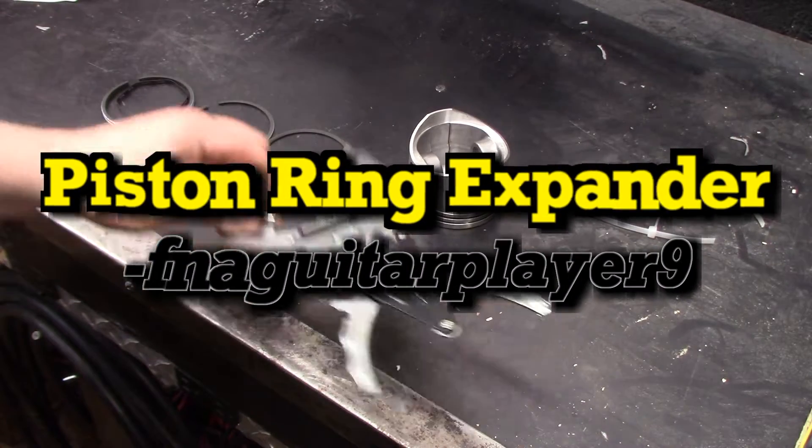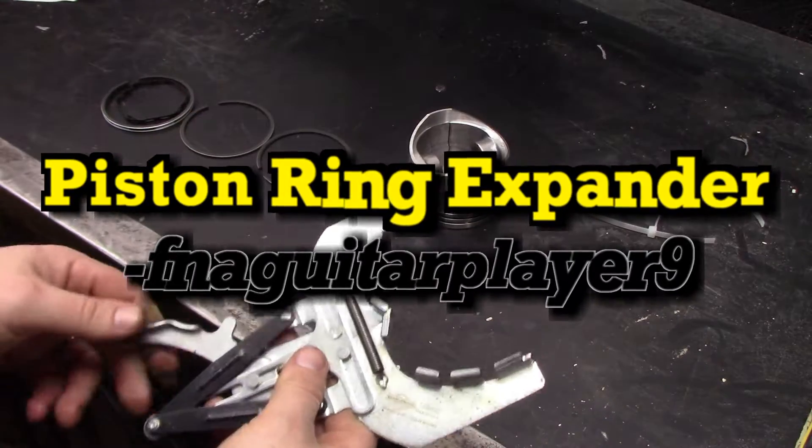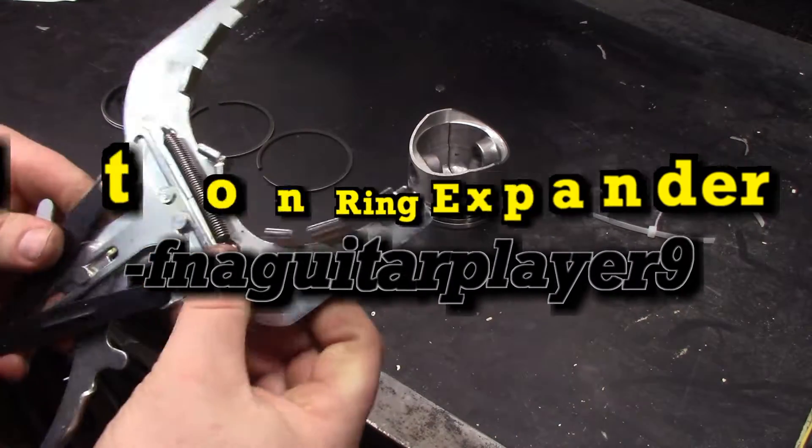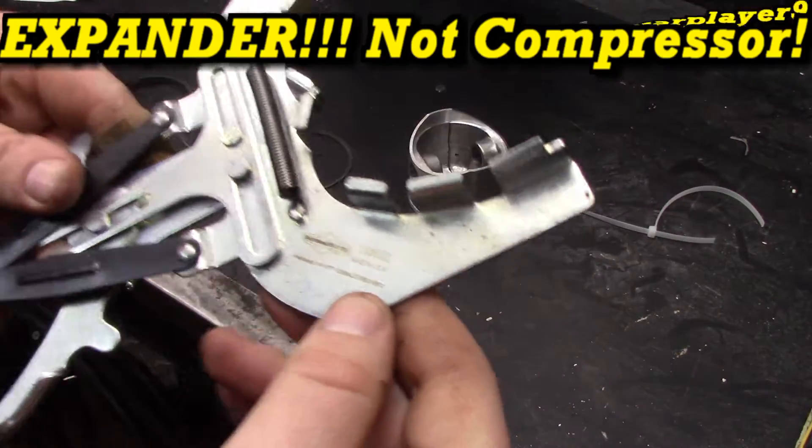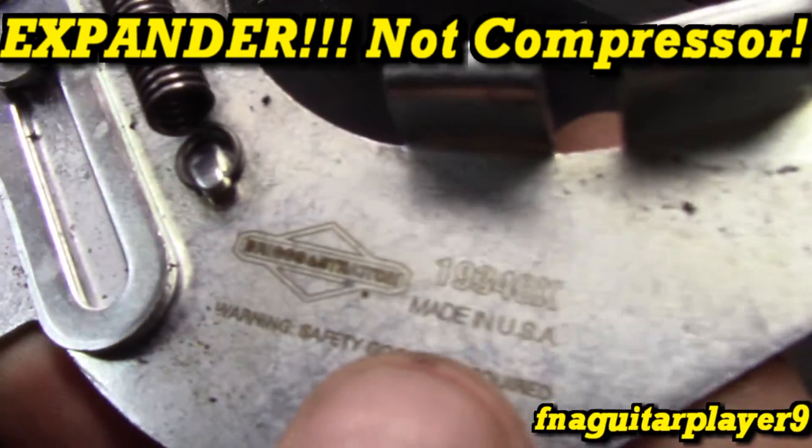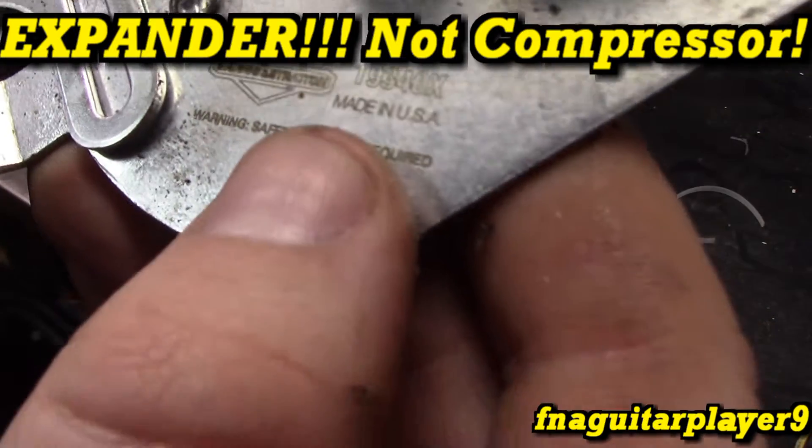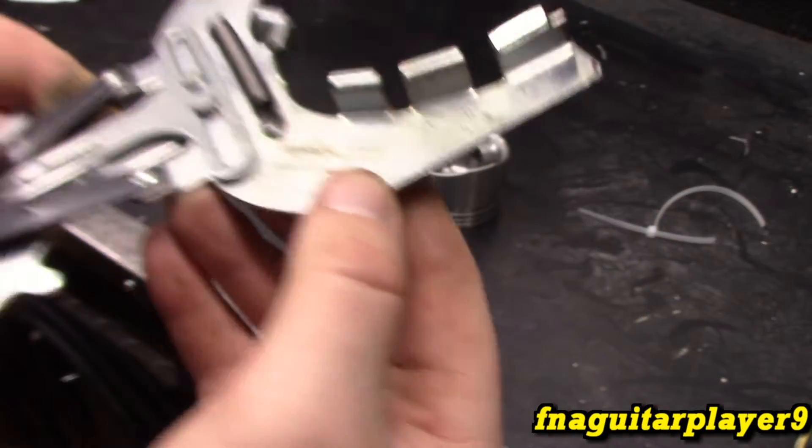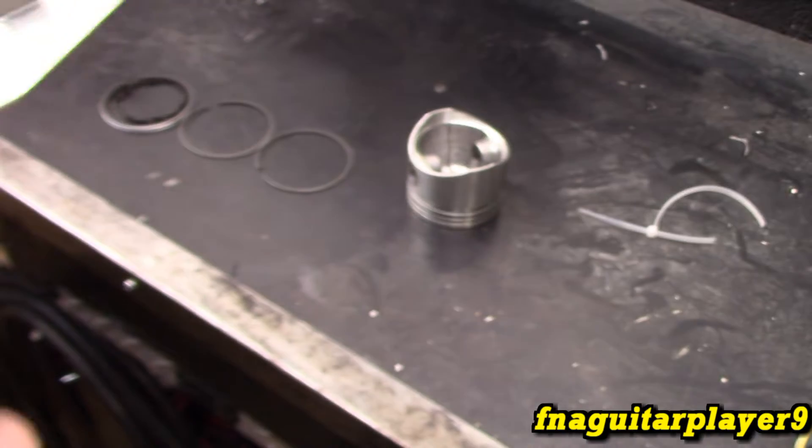Hey guys, I want to make a video talking about probably one of the most important and overlooked tools in rebuilding small engines: a piston ring compressor. This is an actual Briggs & Stratton brand one, part number 19340X, made in the US. It says wear safety glasses, so make sure to do that.